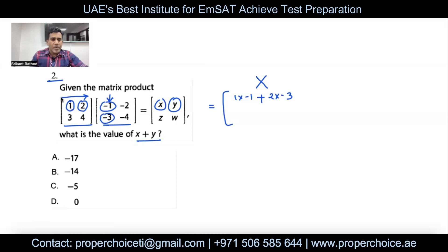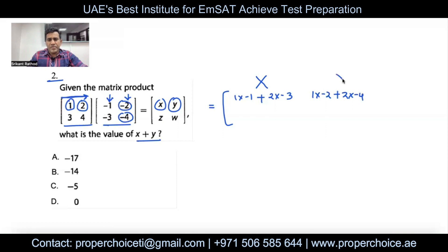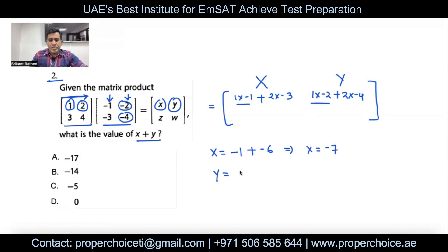For y, multiply the first row with the second column: 1 times negative 2, plus 2 times negative 4. I won't compute z and w since I don't need them. So x equals 1 times negative 1 plus 2 times negative 3, which is negative 1 plus negative 6, giving x equals negative 7. For y: 1 times negative 2 is negative 2, plus 2 times negative 4 is negative 8, so y equals negative 10.